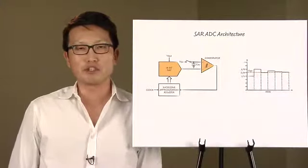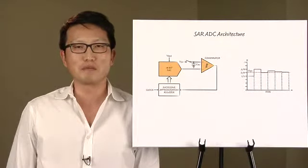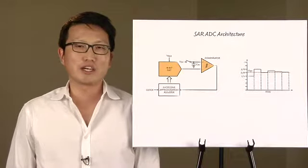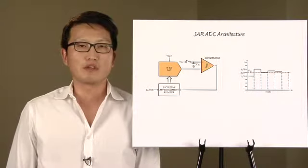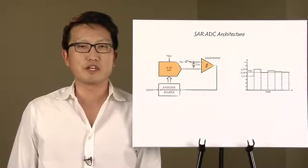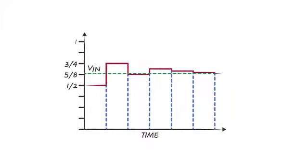The basic operation is straightforward. The CDAC generates the first approximation of the input voltage, the comparator checks to see if this approximation is below or above the input, and the control logic updates the CDAC to generate a closer approximation. As you can see, the voltage on the CDAC should converge towards the input voltage.